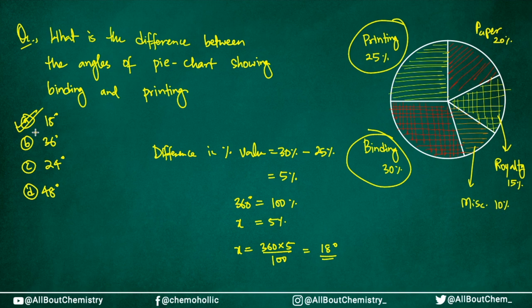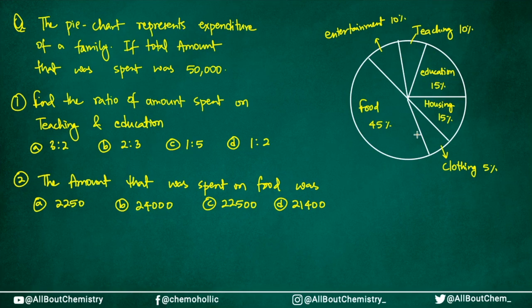This is how smartly you can use a pie chart to solve questions with various types of steps. I will give you a question so you can also practice. Here is your homework question with two parts. This is a pie chart representing the expenditure of a family, and the total amount spent was rupees 50,000.